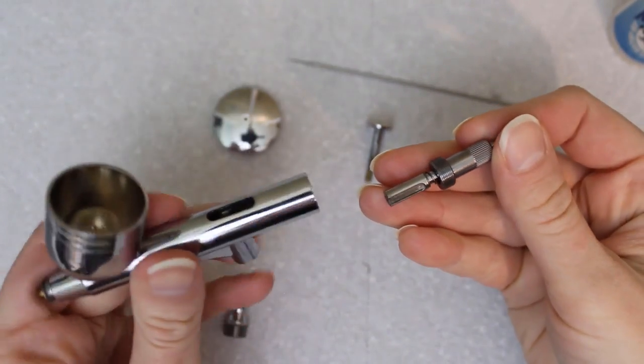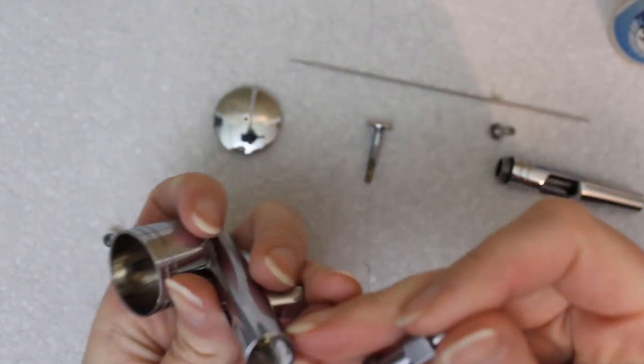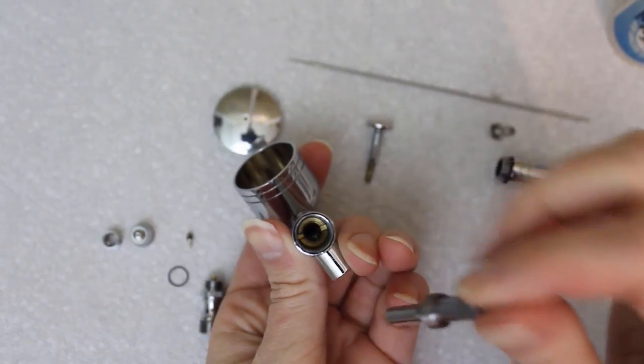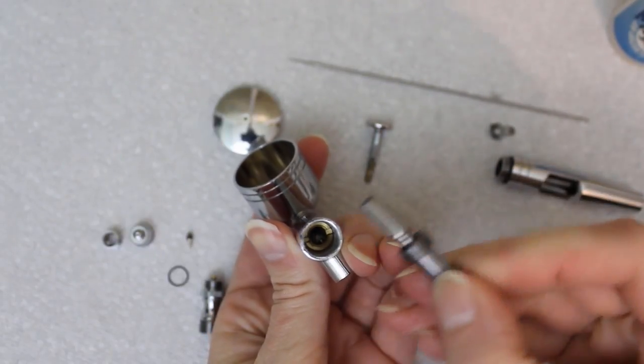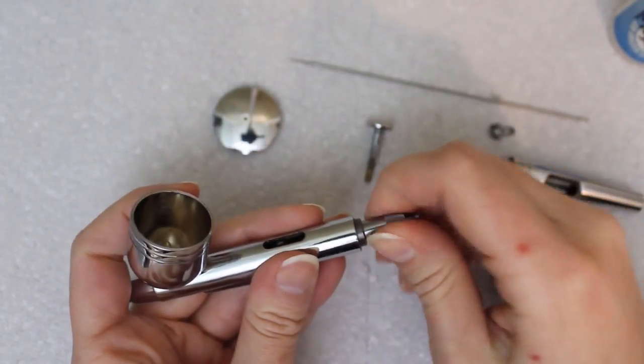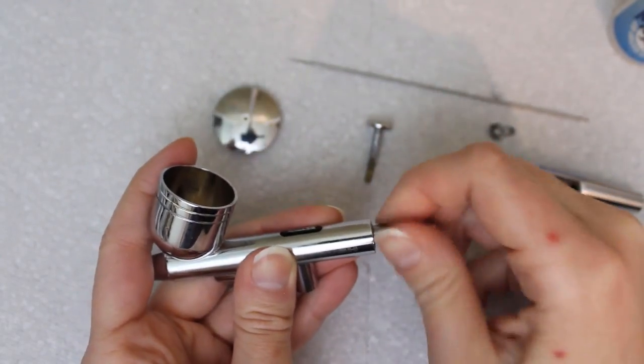This piece goes in first. It's a few pieces together, the needle chucking guide and the needle adjusting sleeve. You can see the guide has a groove in one side, which lines up with a screw inside the airbrush. Slide that on over the screw, and then screw it in, but not too tight just yet.